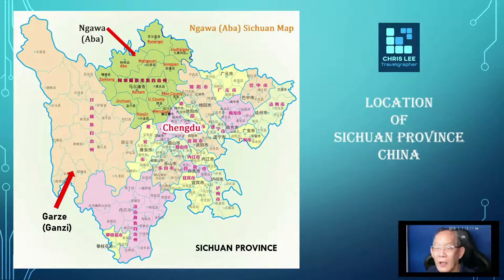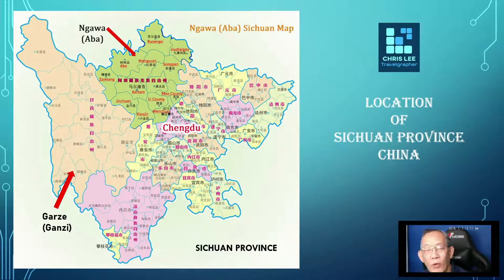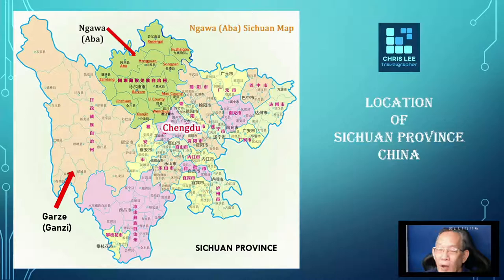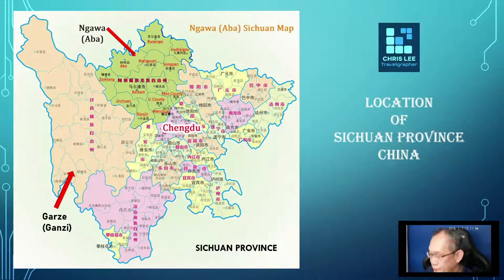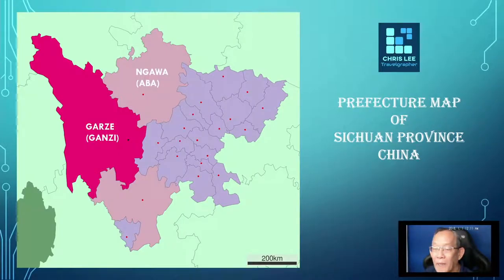Let's see what area we will cover in this travel journey across five episodes. We will basically cover two important prefectures in Sichuan province. One of them is the Ganzi prefecture, and the one to the north is the Aba prefecture. We are starting our journey from Ganzi prefecture, and later in the last two episodes we will move on to the Aba prefecture.